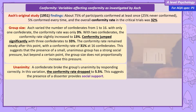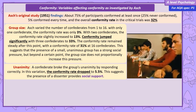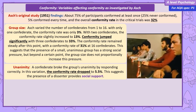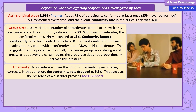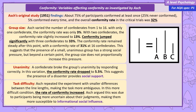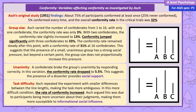In Asch's unanimity variation, he instructed one confederate answering before the participant to act as an ally — a dissenter who gave the correct answer, providing social support for the true participant. This made it easier to resist the power of the group, and the conformity rate dropped to 5.5%. In the task difficulty variation, Asch increased the difficulty by making the comparison lines closer in length to the standard line. This increased the ambiguity of the task and, while Asch didn't report exact figures, he said this significantly increased the rate of conformity — suggesting the addition of informational social influence, with participants being less sure of the correct answer and looking to the group for guidance.